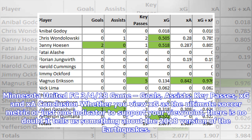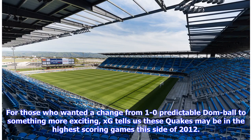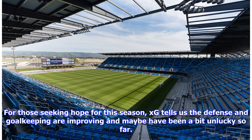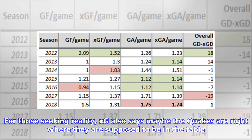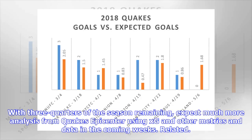Whether you view xG as the ultimate soccer metric or just one indicator to support your viewpoint, there is no doubt it tells us something about the 2018 version of the Earthquakes. For those who wanted a change from predictable long-ball soccer to something more exciting, xG tells us these Quakes may be in the highest-scoring games this side of 2012. For those seeking hope this season, xG tells us the defense and goalkeeping are improving and maybe have been a bit unlucky so far. For those seeking reality, xG also says maybe the Quakes are right where they are supposed to be in the table. With three quarters of the season remaining, expect much more analysis from Quakes Epicenter using xG and other metrics and data in the coming weeks.